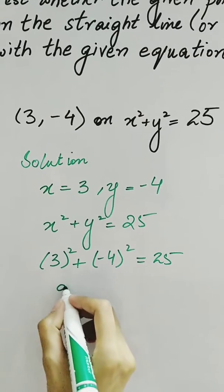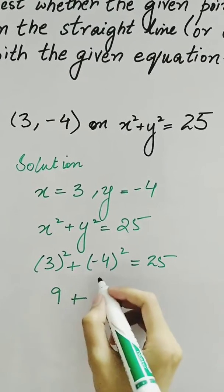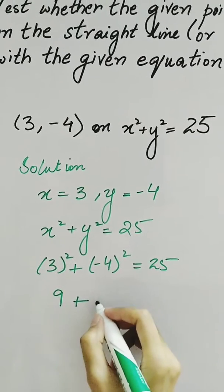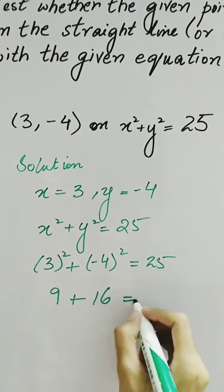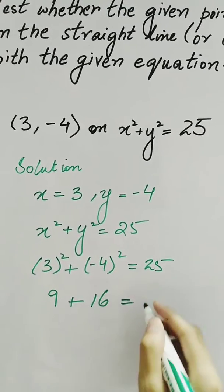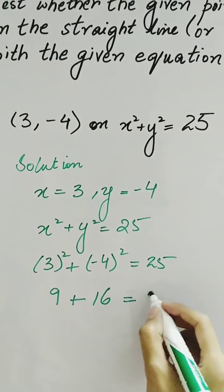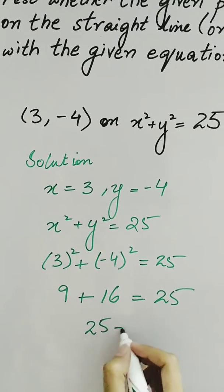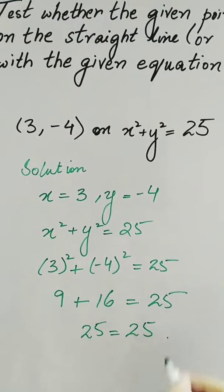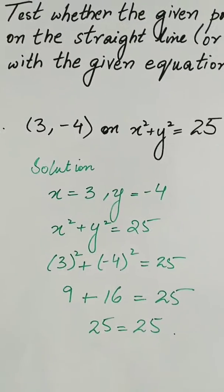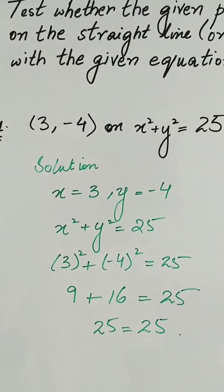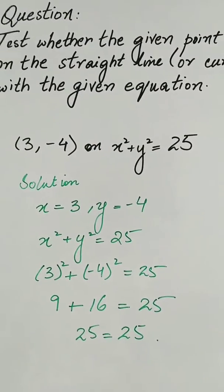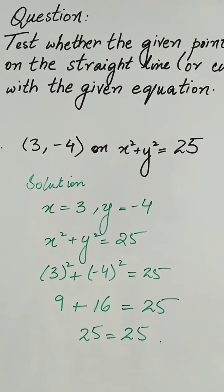3 multiplied by 3 is equal to 9. Similarly, -4 into -4 is positive 16, as minus times minus equals plus. So here we have 25 = 25, which means that the given points satisfy the equation of the given line.